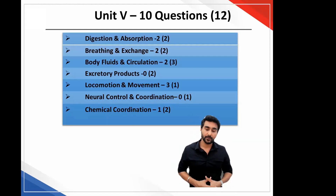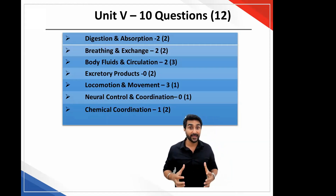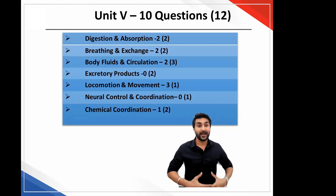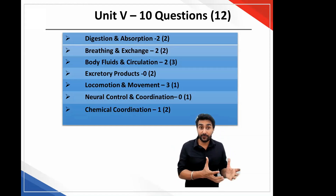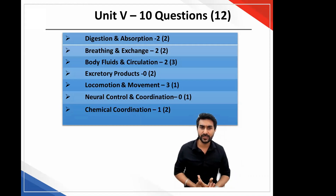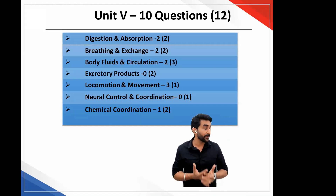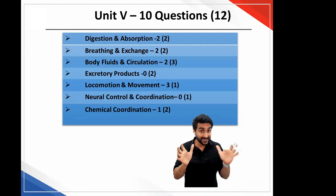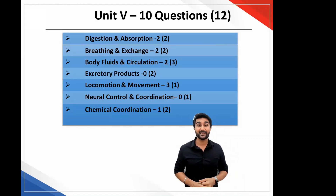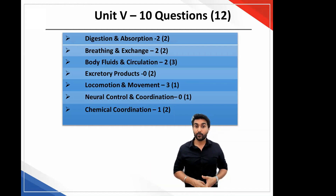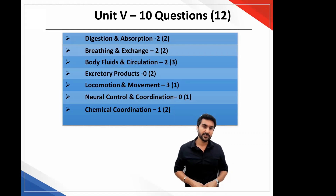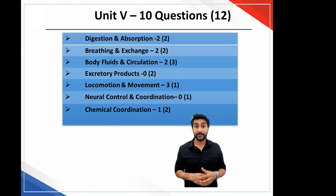Unit five had 10 questions. This is the unit covering all of human physiology, but the number of questions was comparatively low despite having around seven chapters. You had not even a single question from nervous system, not a single question from excretion. There was only one question on erythropoietin which is an NCERT line from the chemical coordination chapter. So the number of questions was less than expected since nervous system and excretion were completely missed.